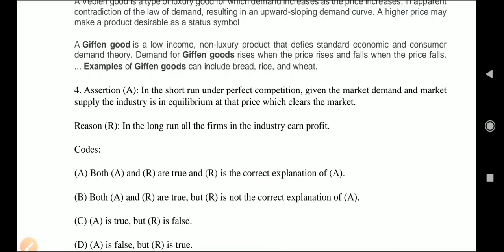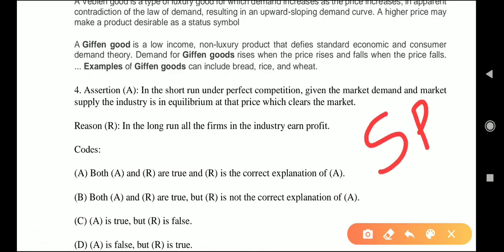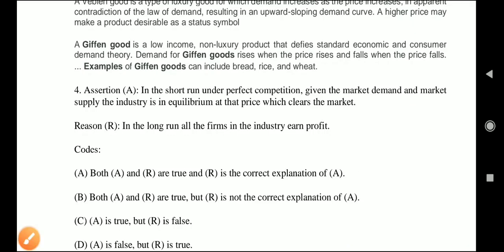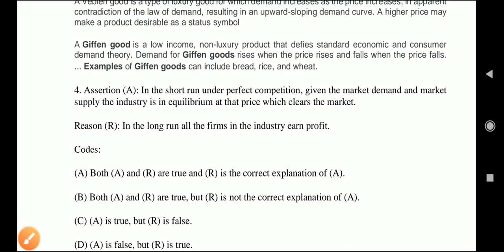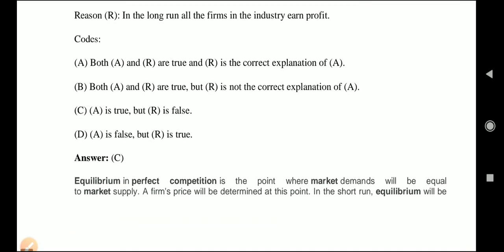In perfect competition, in the short run, firms can earn super normal profit. Then other firms enter the market and super normal profit changes to normal profit. If firms incur losses, they exit the market and normal profit is restored. So in the long run, there are zero economic profits. Equilibrium in perfect competition is where market demand equals market supply, and price is determined at that equilibrium point.